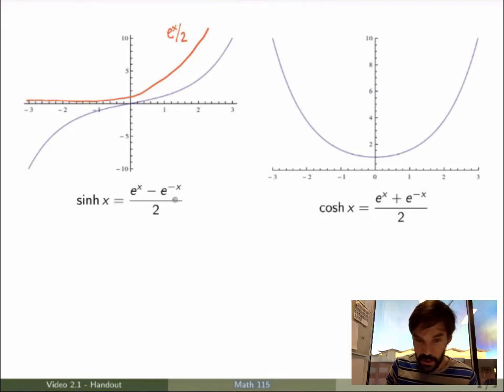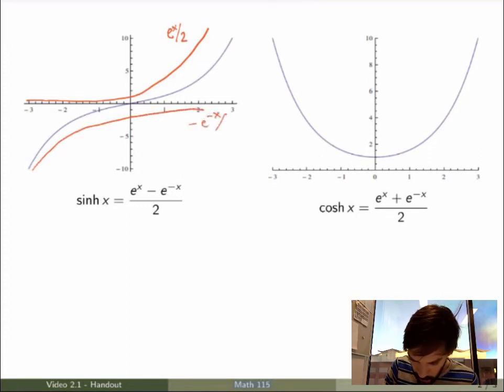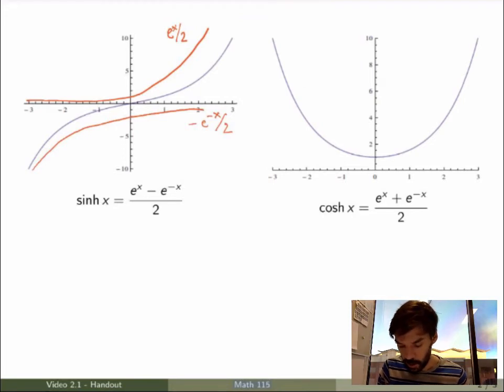While the second term is minus exponential of minus x over 2, whose graph would be something like this. Now if I add these two graphs, I indeed get the graph of the hyperbolic sine function. Now this is the graph of the hyperbolic cosine function, and you can see that if you add the two, you will end up with the graph of the exponential function as expected.